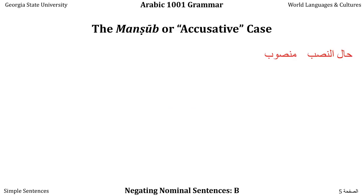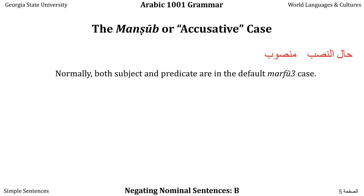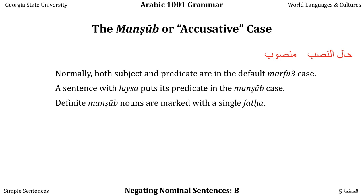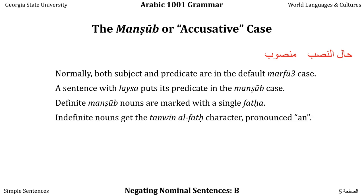Let's look at the theory behind the Mansoub or accusative case. Its formal name is Hal al-Nasoub — the state of being set up or delegated. Most of the time we say Mansoub, which means 'having been set up or delegated.' Normally both the Mubtada and the Chabar are in the default Marfu case, but a sentence with Leysa puts its Chabar in the Mansoub case. Definite Mansoub nouns are marked with a single Fatah, and indefinite nouns get the Tanwina al-Fatah character, pronounced 'n.'